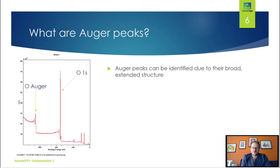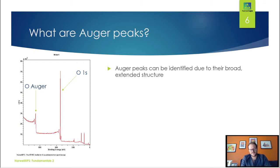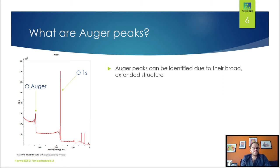So that's how chemical shifts arise. Another thing which can be quite useful for looking at what chemical states and structures are in your sample is Auger peaks. These are generally quite obvious because they have a broad and extended structure as opposed to the nice sharp peaks we've looked at so far. For example, here we've got an Oxygen 1S — a single very nice sharp peak — whereas another Oxygen 1S is a bit broader with a couple of extra features.